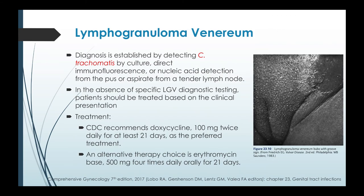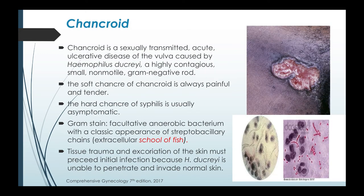Diagnosis is established by detecting Chlamydia trachomatis by culture, direct immunofluorescence, or nucleic acid detection from pus or aspirate from a tender lymph node. In the absence of specific LGV diagnostic testing, the patient should be treated based on clinical presentation. The CDC recommends doxycycline 100 milligrams twice daily for at least 21 days as the preferred treatment. An alternative is erythromycin base 500 milligrams four times daily orally for 21 days.